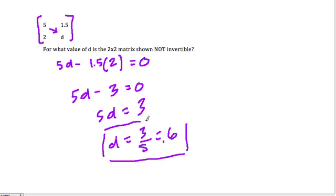So D equals 3 over 5 or 0.6. And when that happens, our discriminant is 0 and the inverse is undefined.